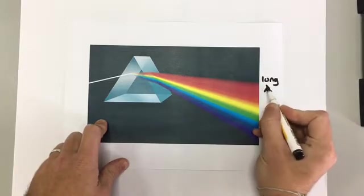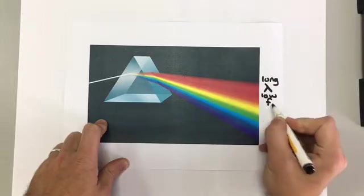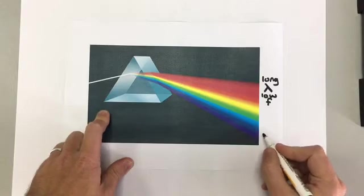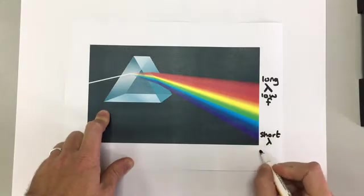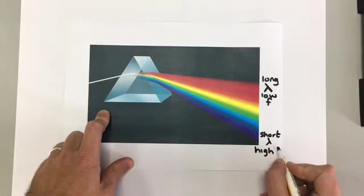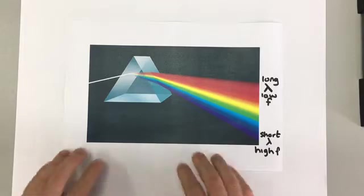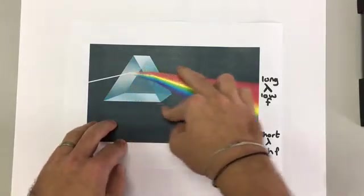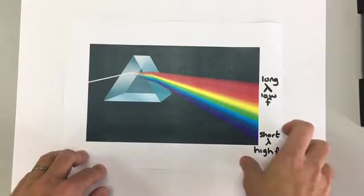We use lambda for wavelength, and the lowest frequency, F for frequency. Violet has a short wavelength and a high frequency. So the light is separated. It is split up into its different colors. We call this dispersion. The light is dispersed into different colors according to their wavelength and their frequency.